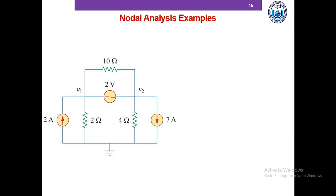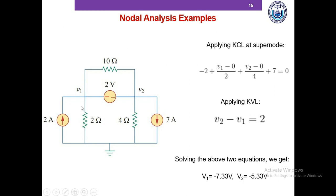Here is another example. Please pause and try to solve it, then we will match your answers. This is the reference node; we have two unknown voltages V1 and V2, and between two non-reference nodes there is a voltage source — indicating this is case 3, the super node case. We need to write a KCL for the super node and then apply KVL. Solving the two equations gives us the unknown voltage values V1 and V2.